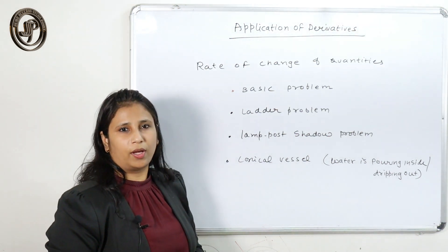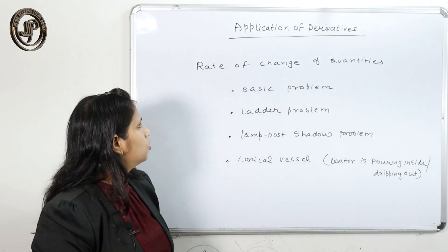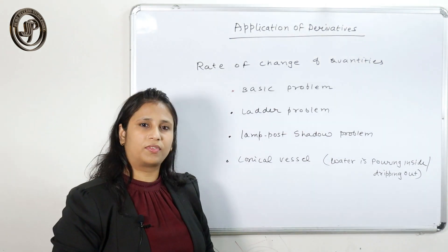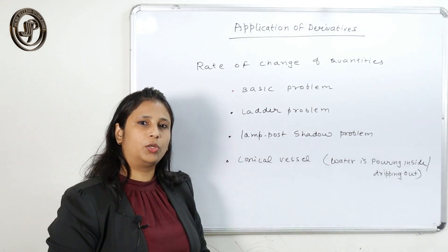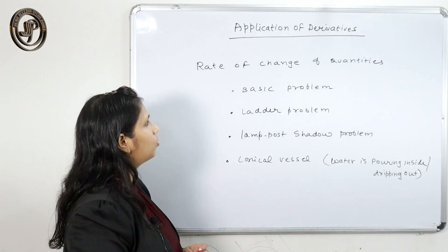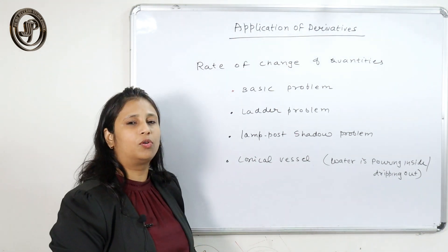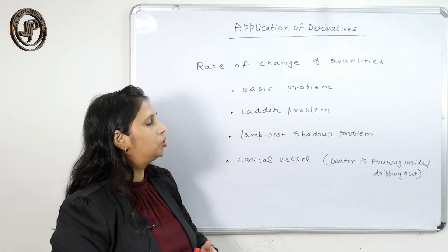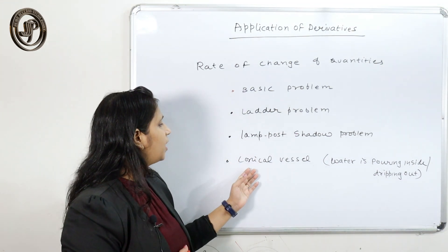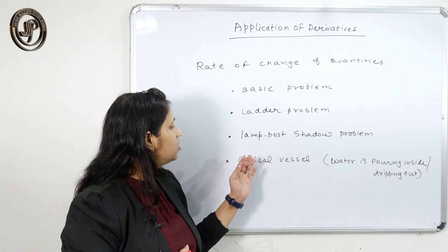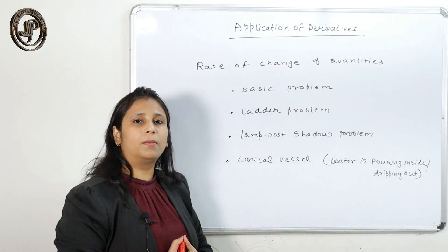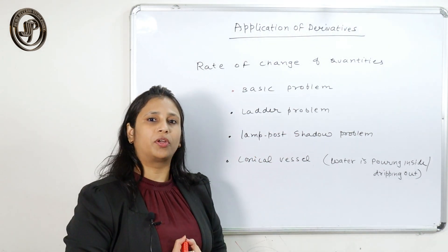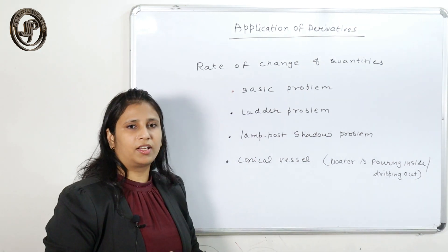Hello students, here we are going to teach you the topic rate of change of quantity from the chapter application of derivative. First I will tell you the basics of the rate of change, then we go for some basic problems, the ladder problem, lamp or shadow problem, and then we end the lecture with some important conical vessel problems. These are very important for our examination point of view. So let's start the lecture.